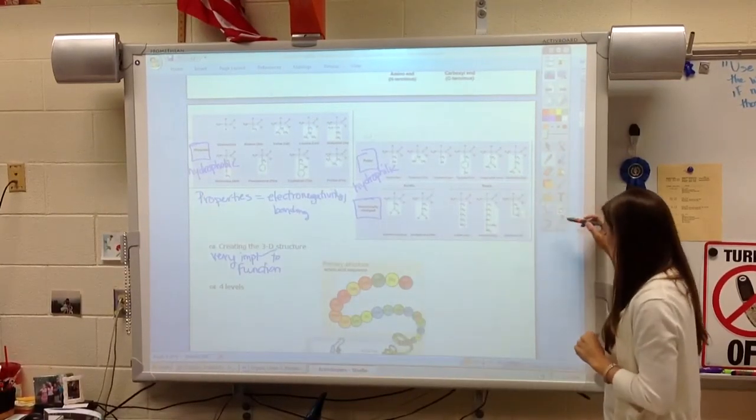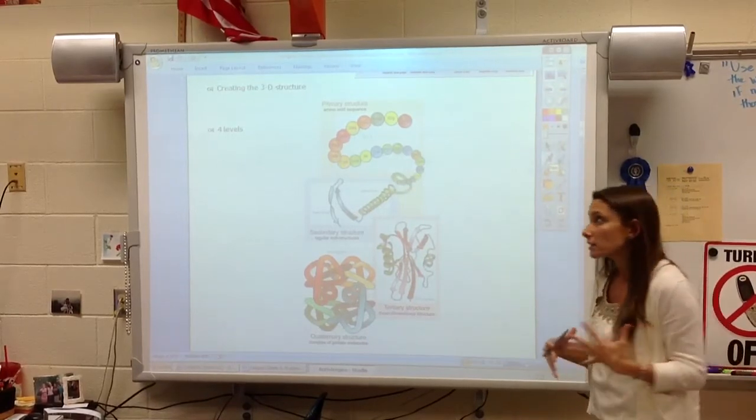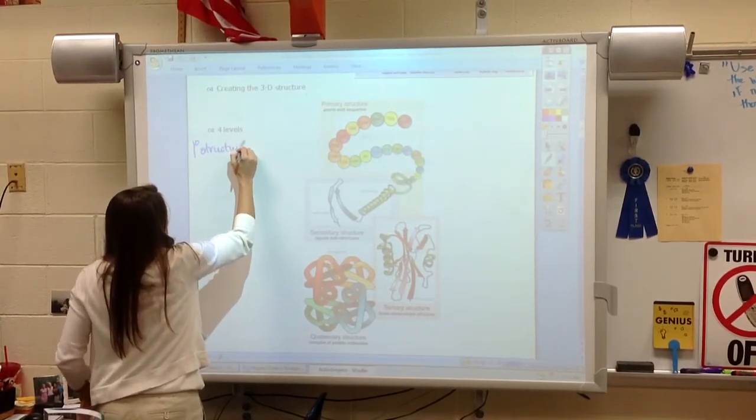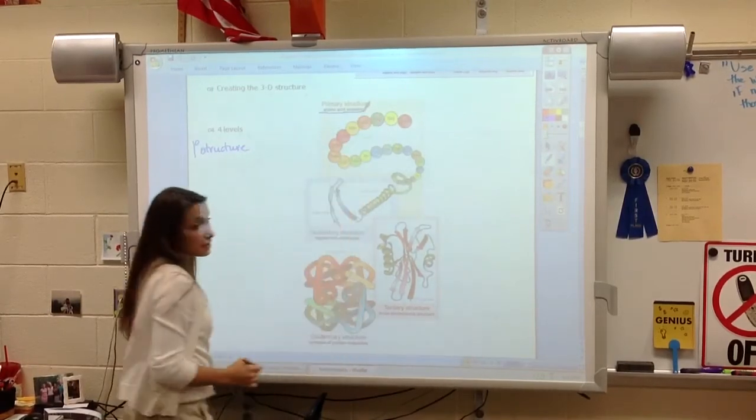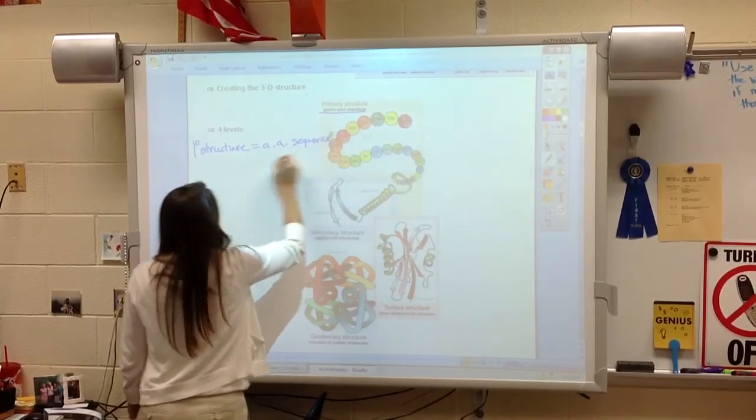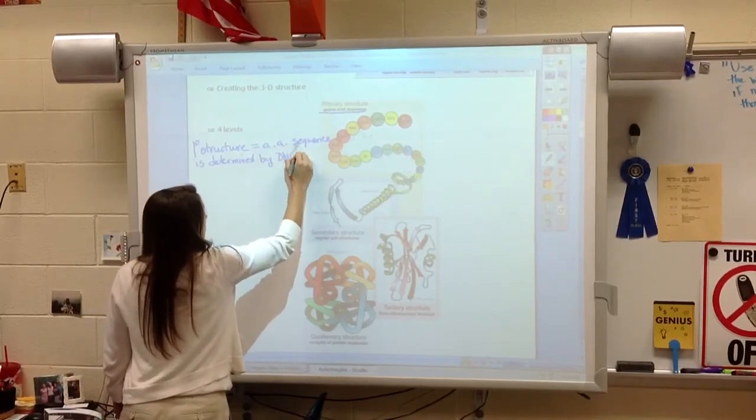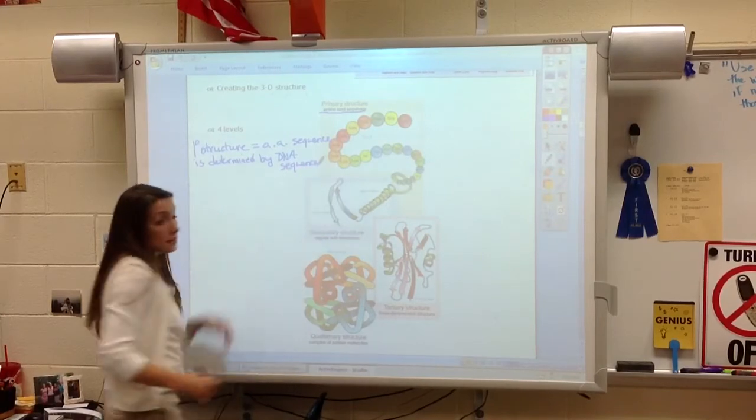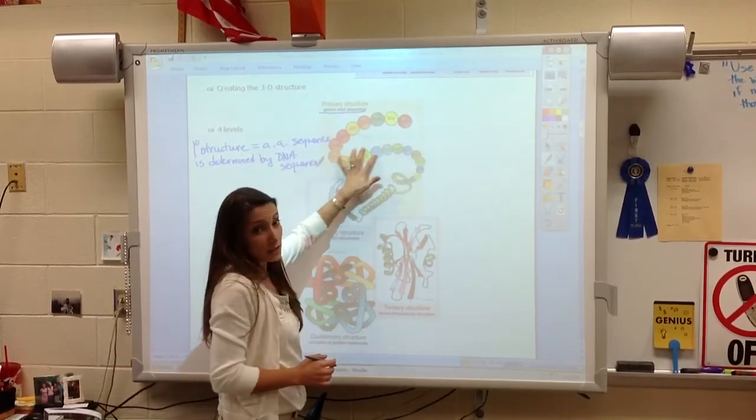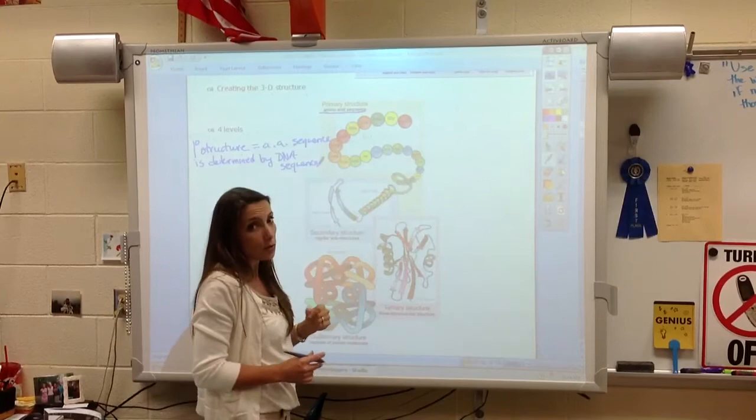What we want to look at now is how do we get these different levels. This is somewhere where you just want to spend some time practicing. We have what's called the primary structure. And that is literally just the amino acid sequence. Now we want to know that the amino acid sequence is actually determined by the DNA sequence. Or more specifically, the DNA determines the RNA, which determines the amino acid sequence. These amino acids go in a specific order according to that organism's DNA. They have to be in that particular order. It's not random.